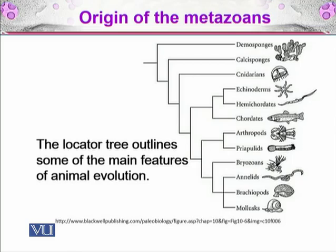Then come the echinoderms and hemichordates. All of these are invertebrates. But after the chordates, there come the vertebrates which are the fish. And there is another clade of arthropods, priapulids, bryozoans, annelids, brachiopods, and molluscs. All of these organisms belong to another clade, and they are developmentally as well as evolutionarily different from the other groups.